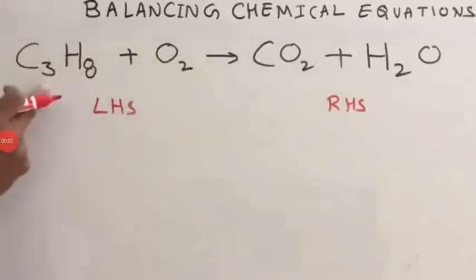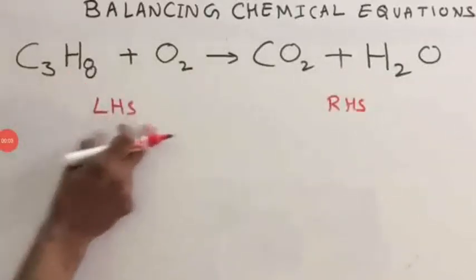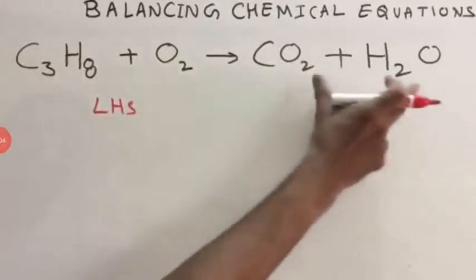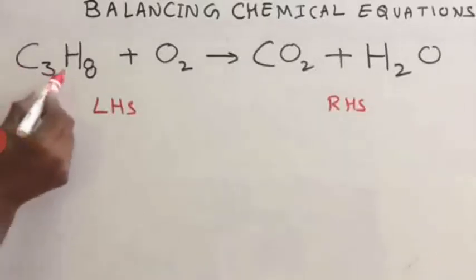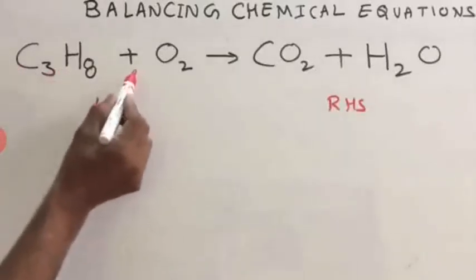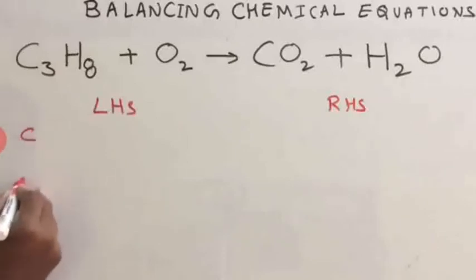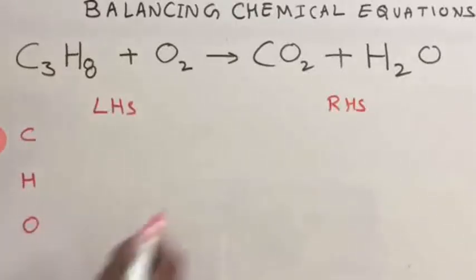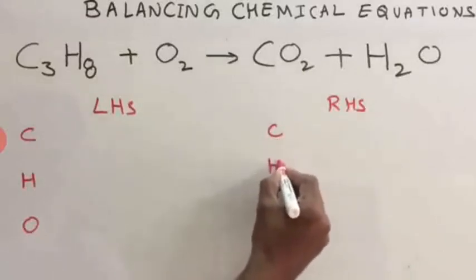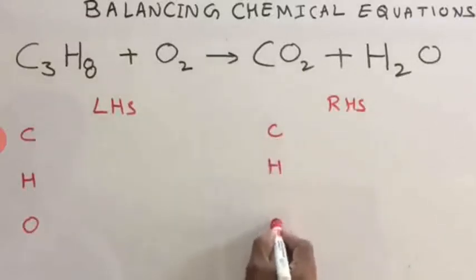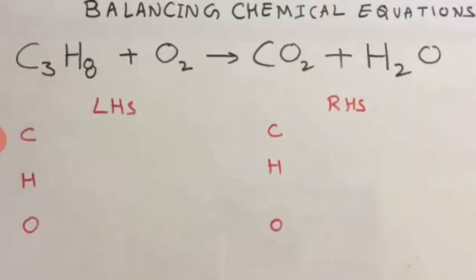Write LHS in the Reactants and RHS in the Products. Then check which atoms are present — like carbon, hydrogen, oxygen. Write carbon, hydrogen, oxygen for LHS, and similarly for RHS also: carbon, hydrogen, oxygen. Then count the number of atoms of each.